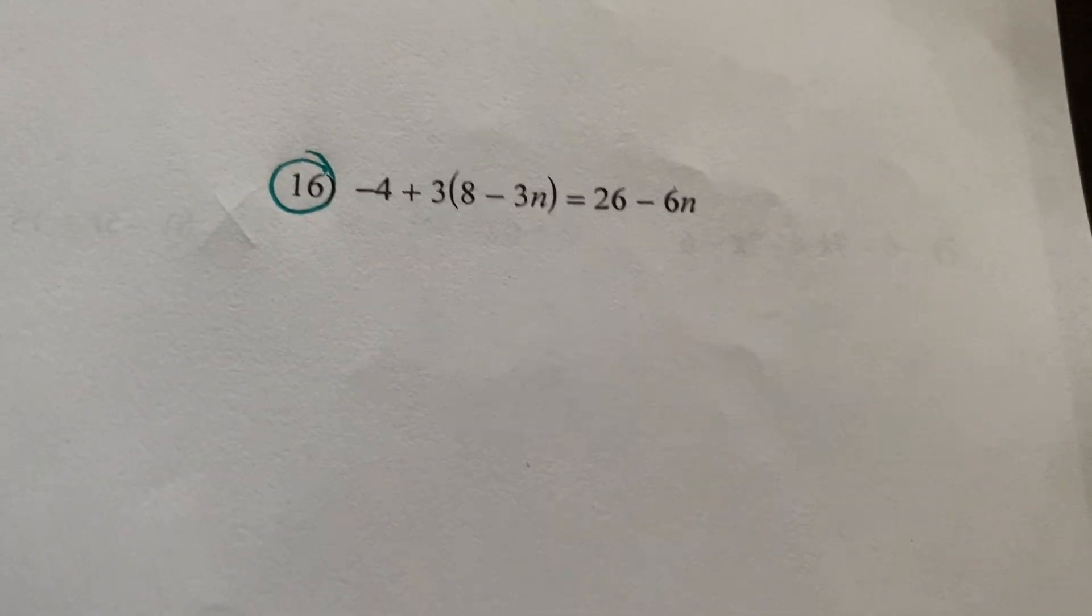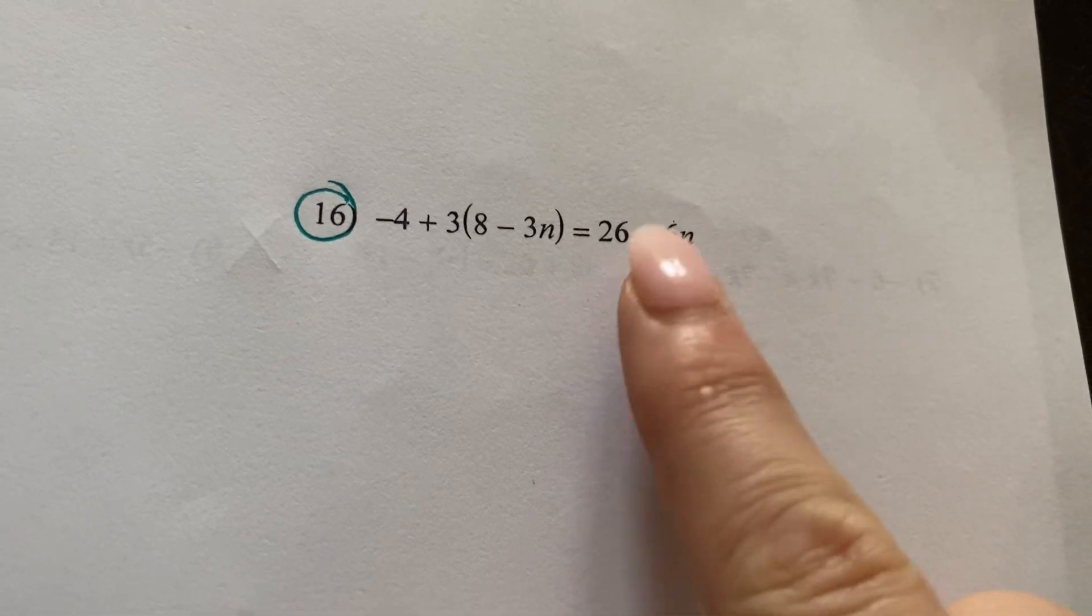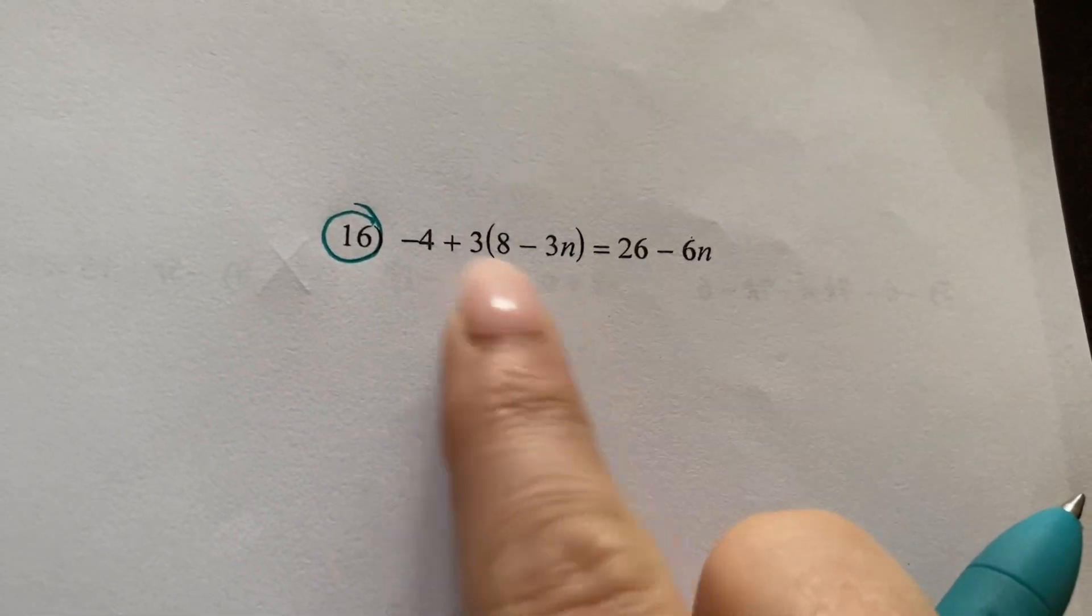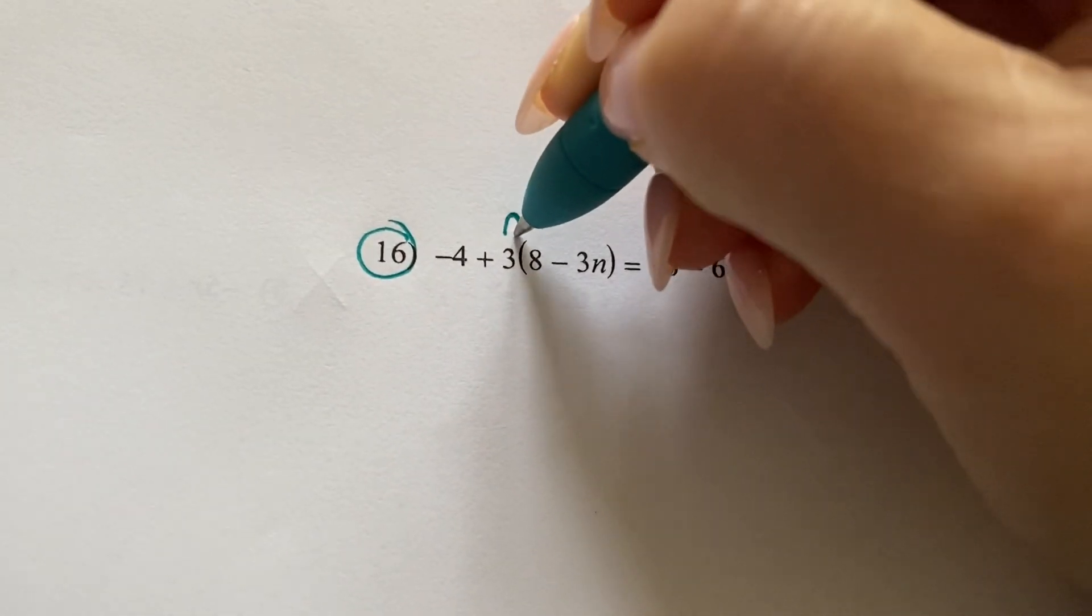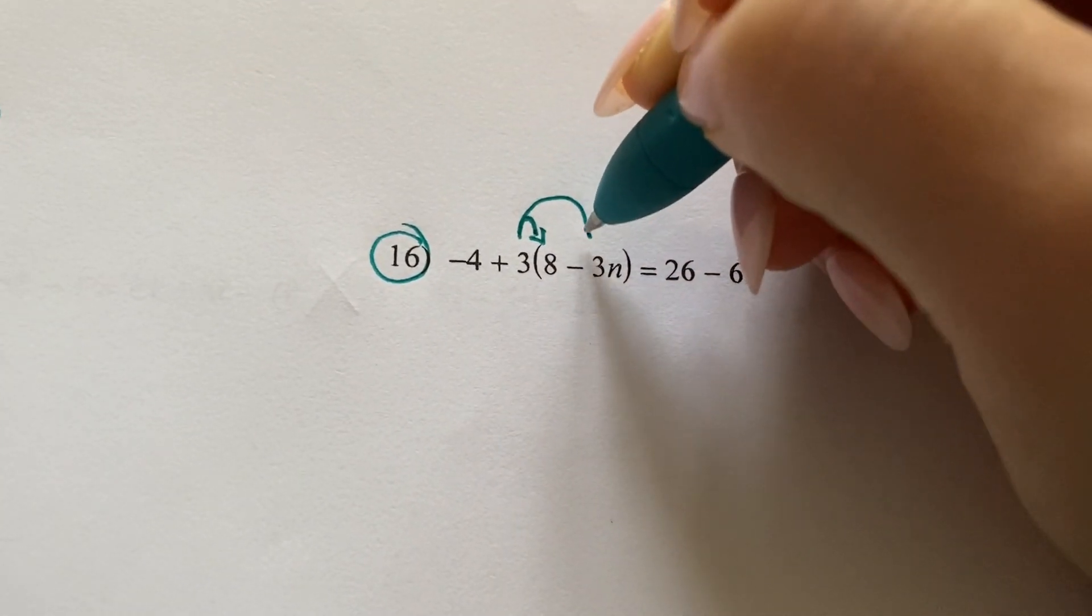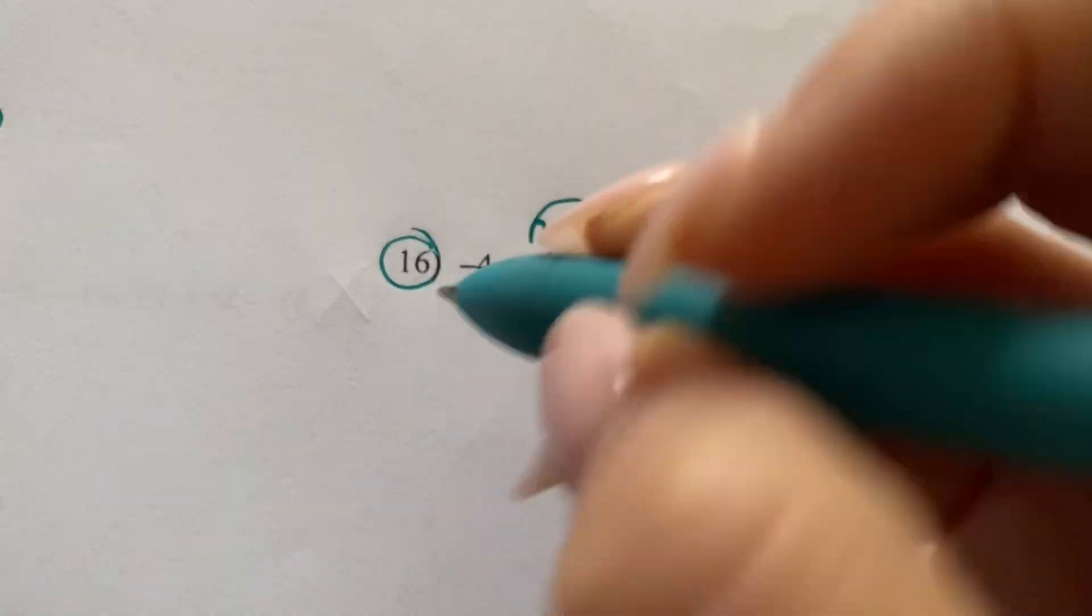Number 16. This side is simplified, but this side is not. I'm going to distribute the 3. That means I multiply it by that number. And I multiply it by that number.